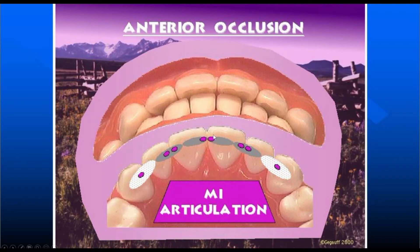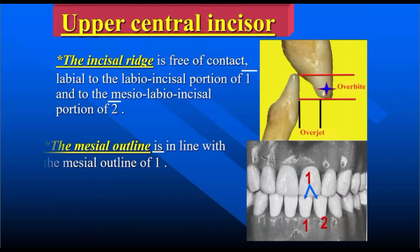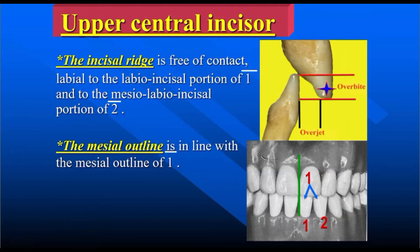There are contact points near the mesial embrasure and distal embrasure of every tooth. For the upper central incisor, the incisor ridge is free of contact. For the maxillary teeth, the incisor edge of central and lateral incisor, the cusp of the canine, and the buccal cusp of the first and second premolar, including the buccal cusp of the molar — all are free of contact. So the incisor edge and cusp of all upper teeth are free of contact.